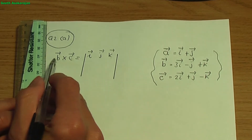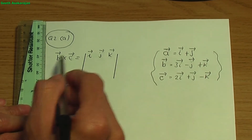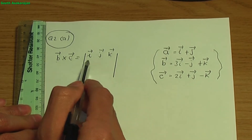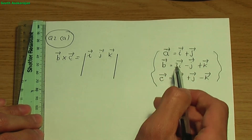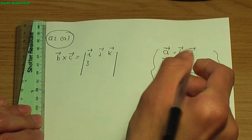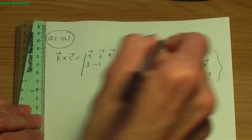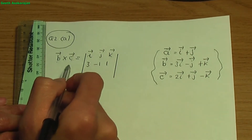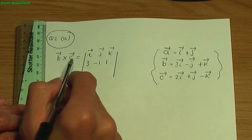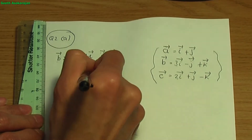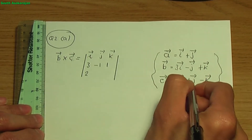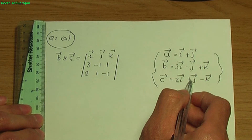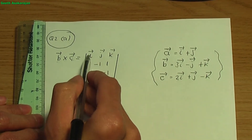The second row of the determinant contains the coefficients of i, j and k in vector B. So the coefficient of i in B is 3, j is minus 1, and k is plus 1. Then insert the coefficients for vector C: i is 2, j is plus 1, and k is minus 1. Insert them in the order i, j and k.